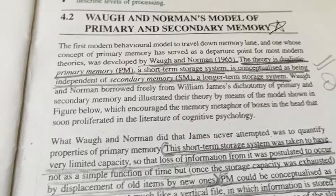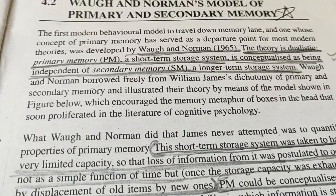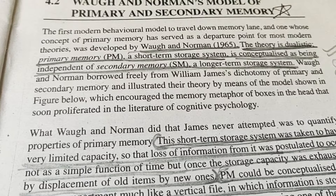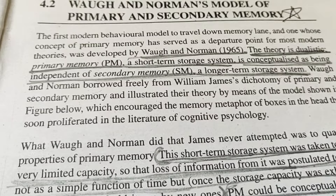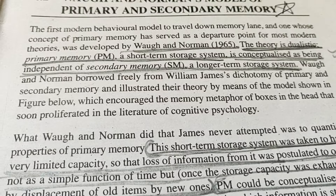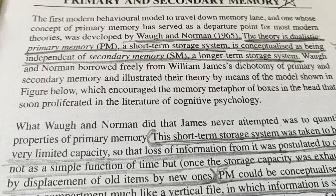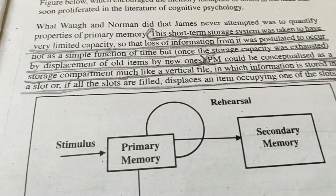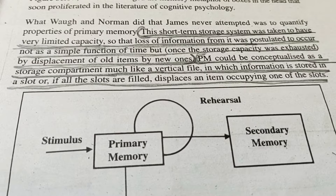In this theory, primary memory, which we represent as PM, is a short-term storage system. It is independent from secondary memory. Secondary memory is called a longer-term storage system — that is, secondary memory is called long-term memory. So PM and SM are the two terms they have used. They said that primary memory is short-term storage, and it has been determined to be independent from secondary memory. Short-term storage is limited.